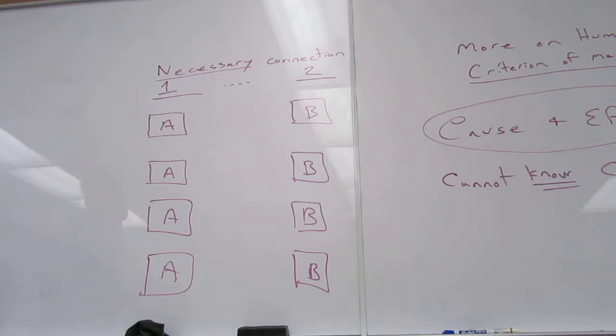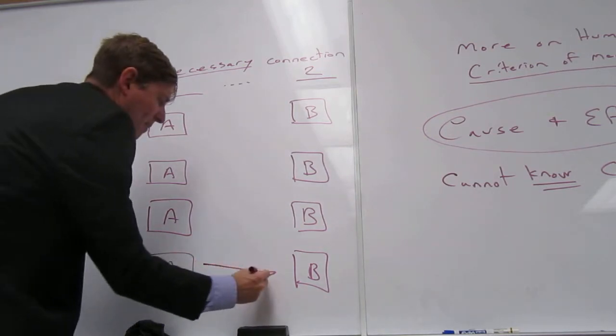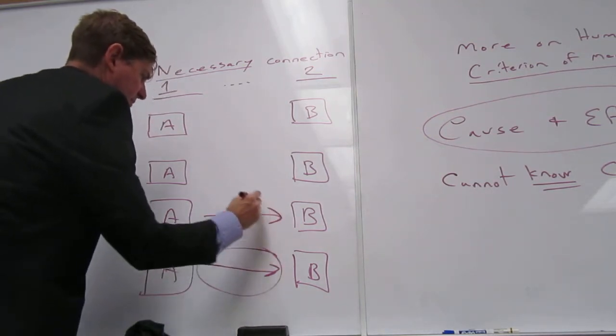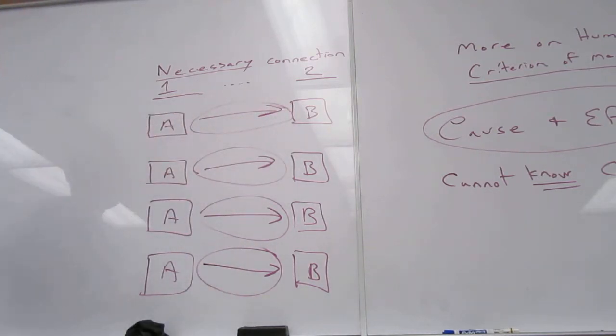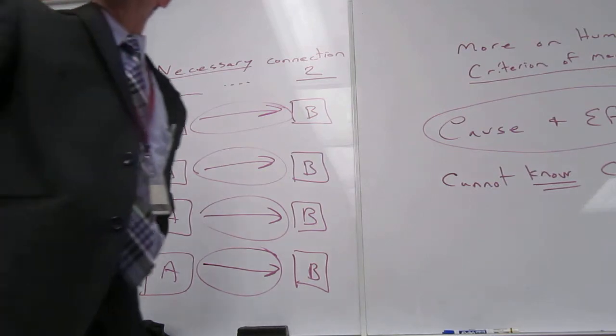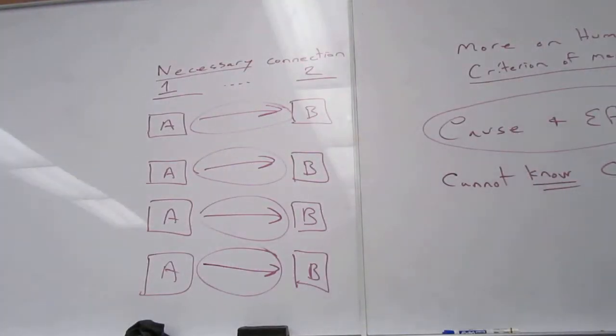We never actually see a connection between A and B. We see one event following the other. And our minds, our mind fills the causal arrow in. We infer that the two events must be connected to one another. Because this is what we have actually witnessed, according to Hume.